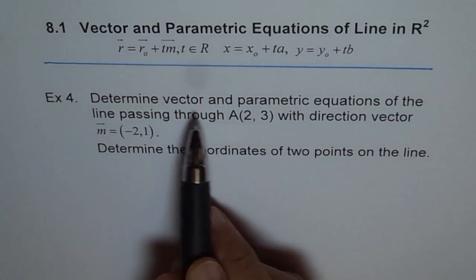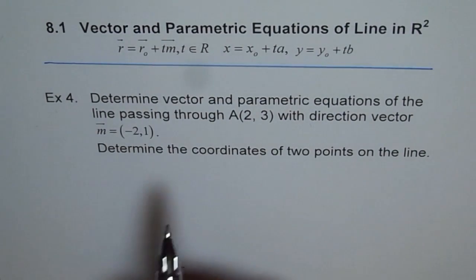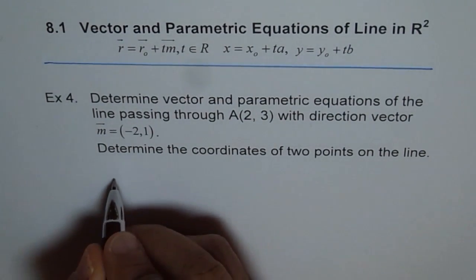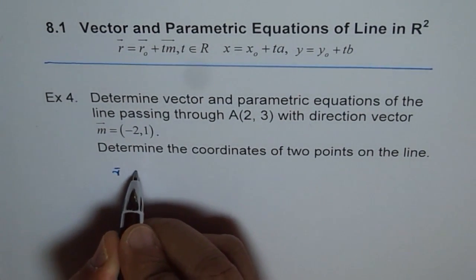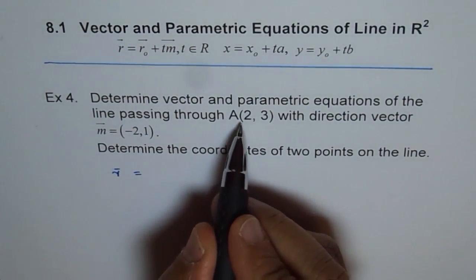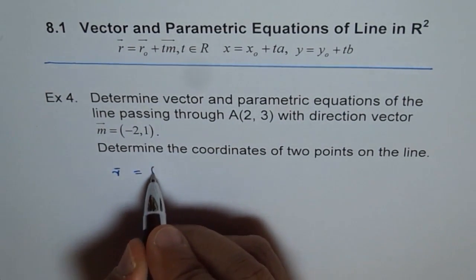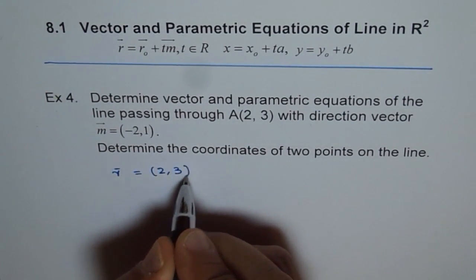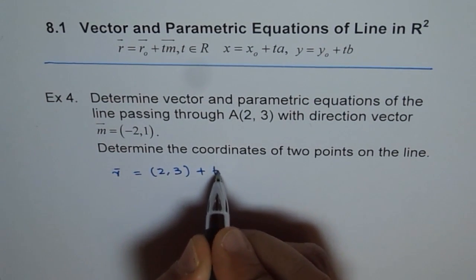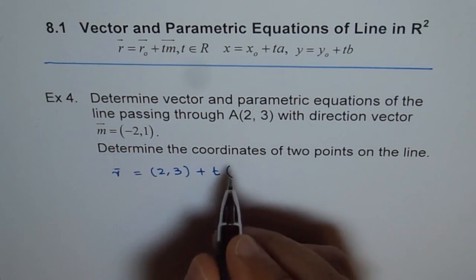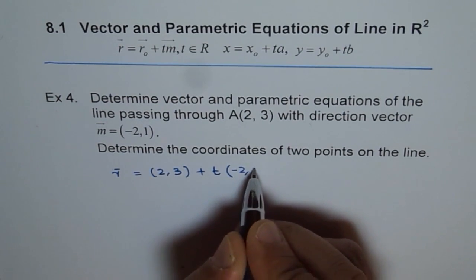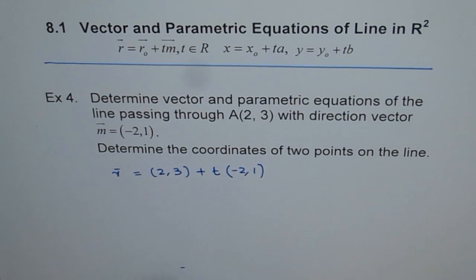So we need to write vector equation. We say vector equation is R equals R₀, which is the given point (2,3), plus T times the direction vector, which is (-2,1). So that becomes our vector equation.